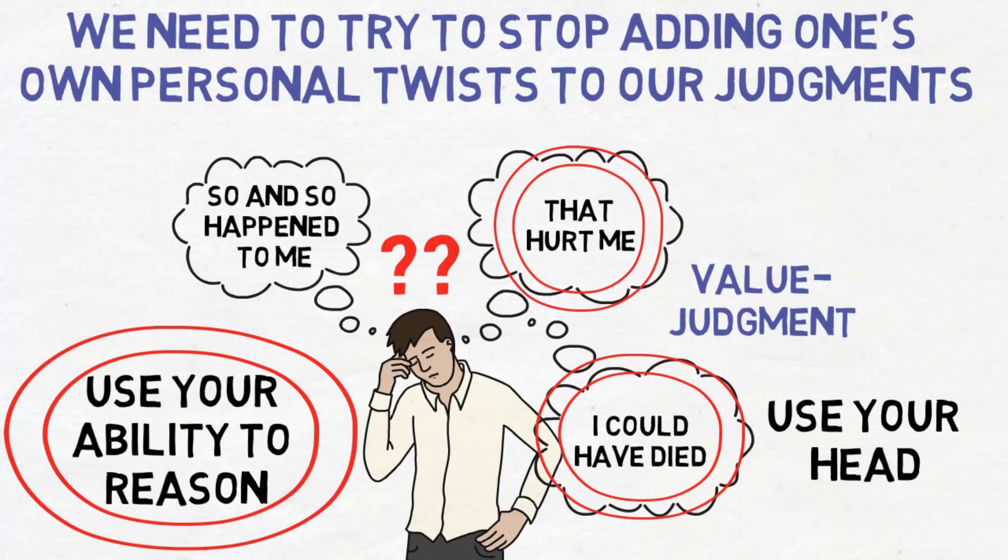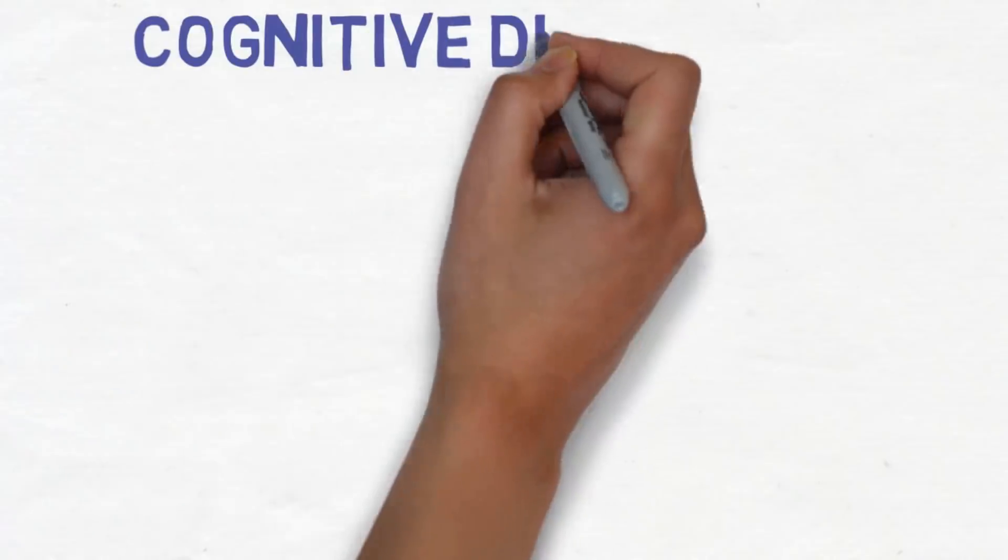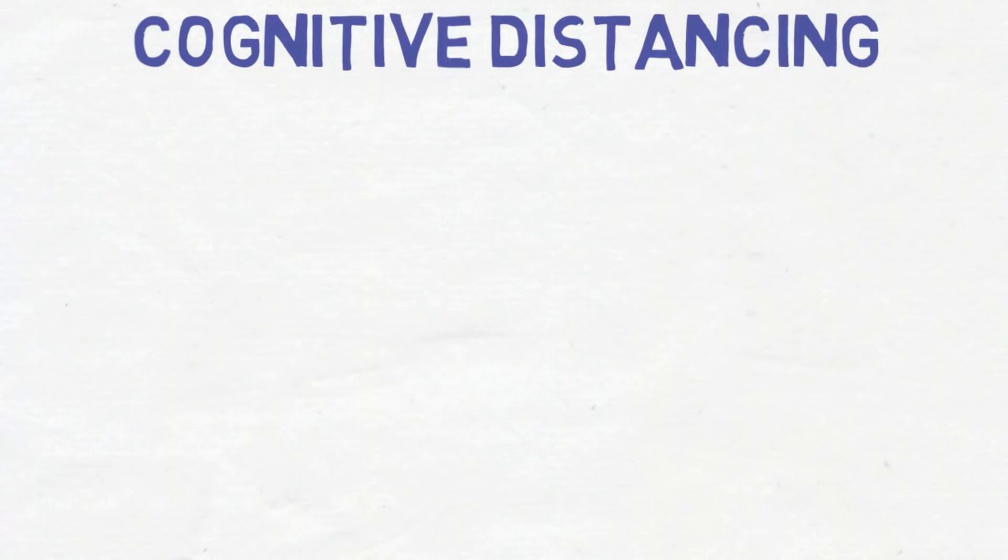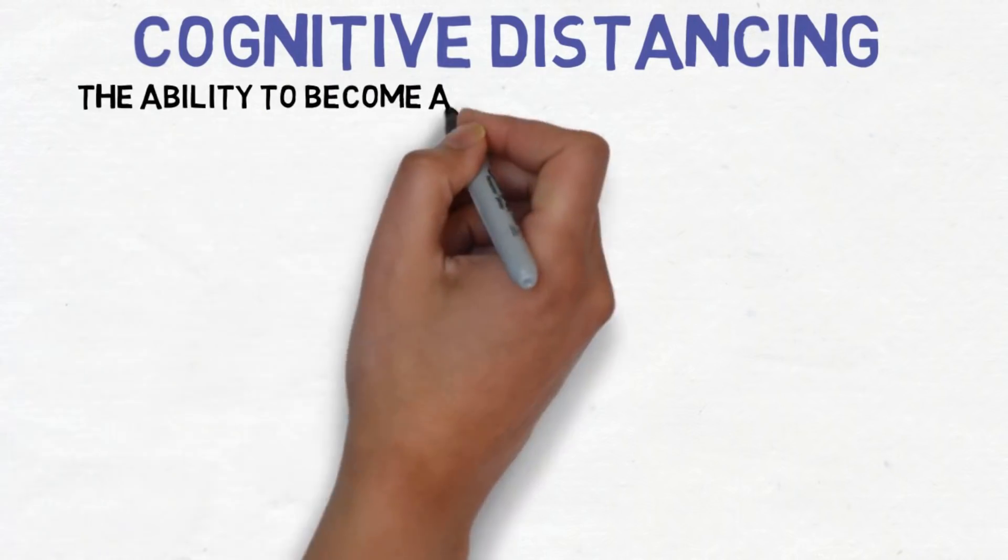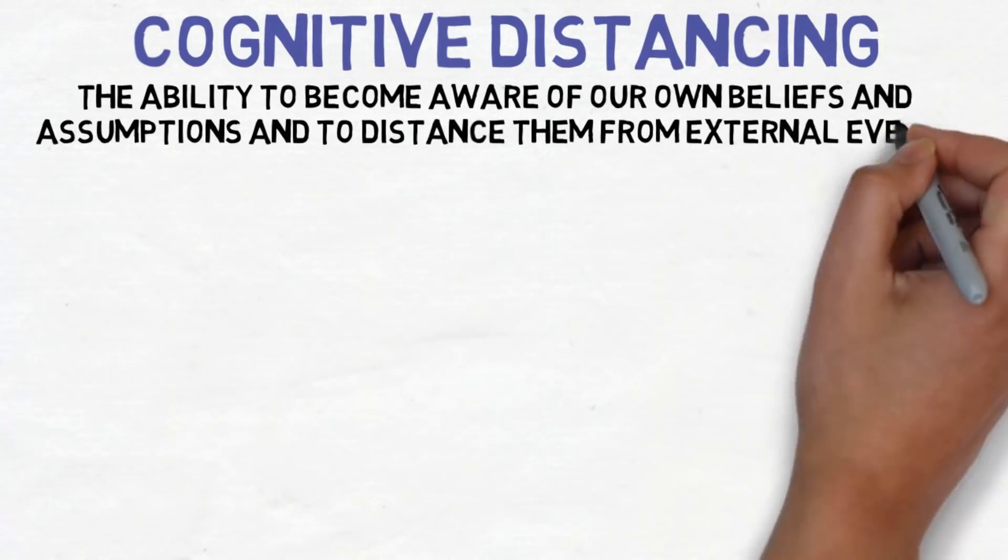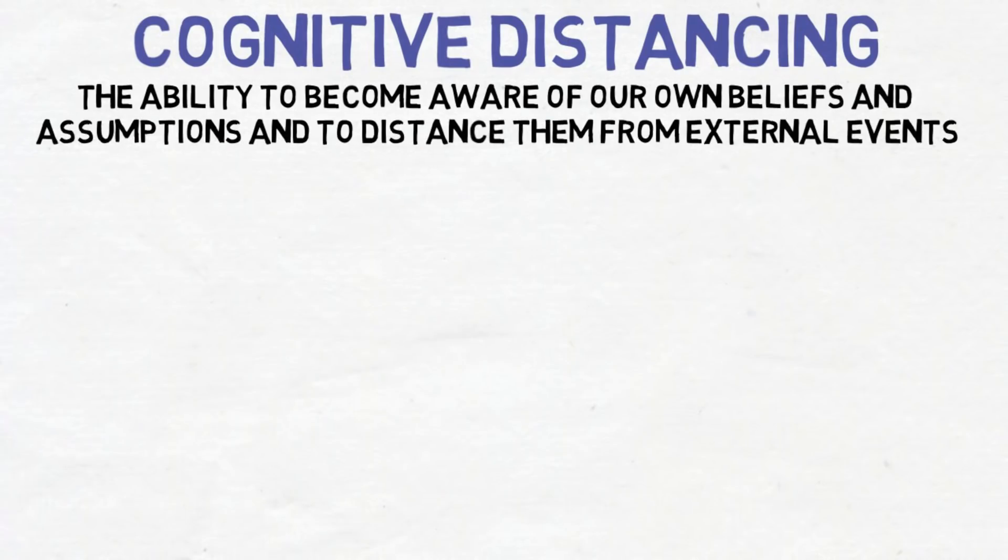In the modern world, this practice is known as cognitive distancing. Cognitive distancing, being the main precursor of cognitive behavioral therapy, or CBT, is basically the ability to become aware of our own beliefs and assumptions and to distance them from external events.